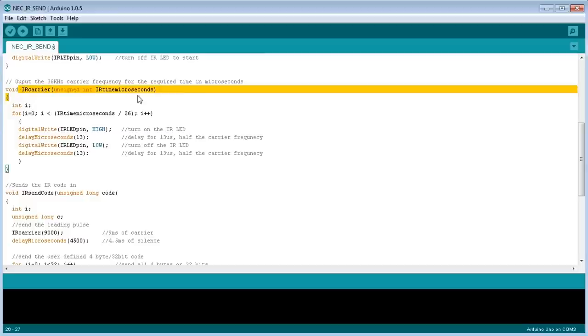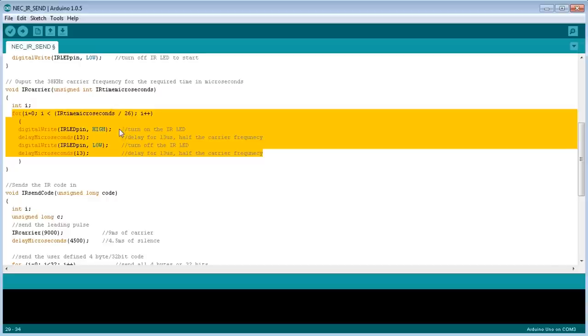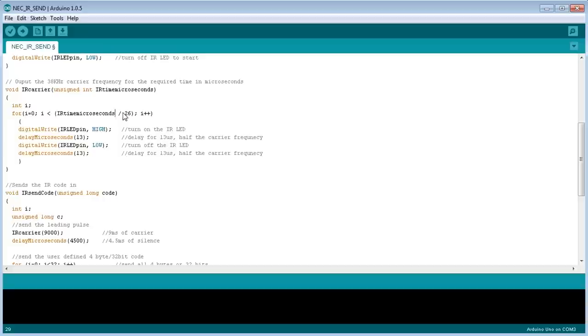The first one is the IR carrier, and that generates 38 kilohertz carrier frequency. All you do is pass up the time in microseconds that you want the carrier frequency to go for, and then it just goes through a for loop and turns the LED off and on there. Not a problem at all. Now it's got to divide that pass time by 26 microseconds here, because 26 microseconds is roughly the inverse of the 38 kilohertz carrier frequency that we got. And then all it does is it sets the, turns the LED on for half that period, or 13 microseconds, and then turns it off for 13 microseconds, and it repeats as long as it needs to.